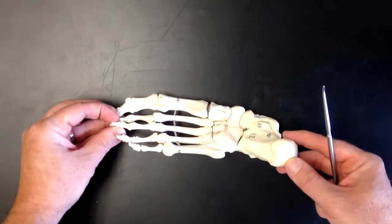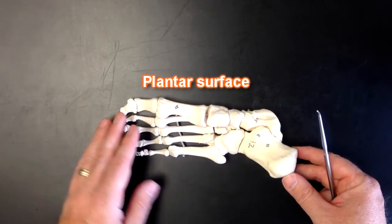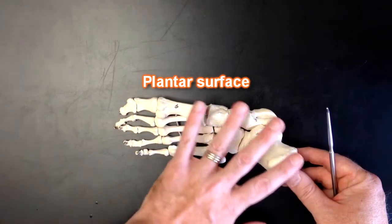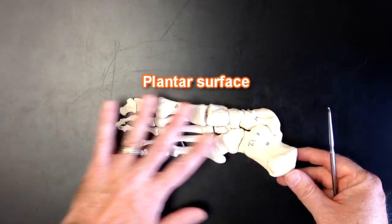The plantar surface of the foot or the undersurface of the foot, the surface that's going to contact the ground when we step on it and walk, that's right here. This is the plantar surface.